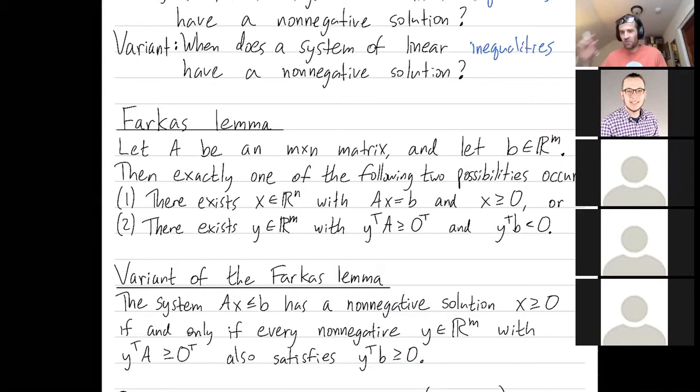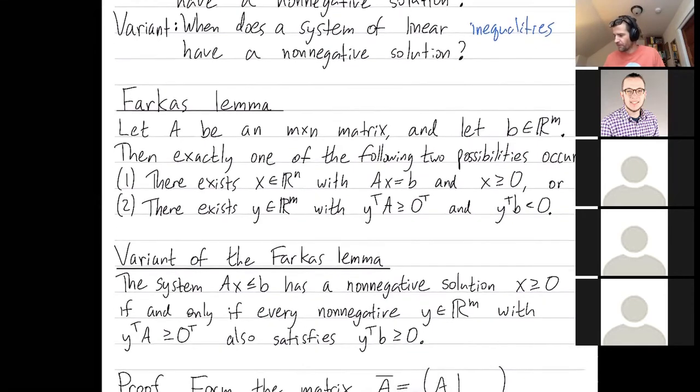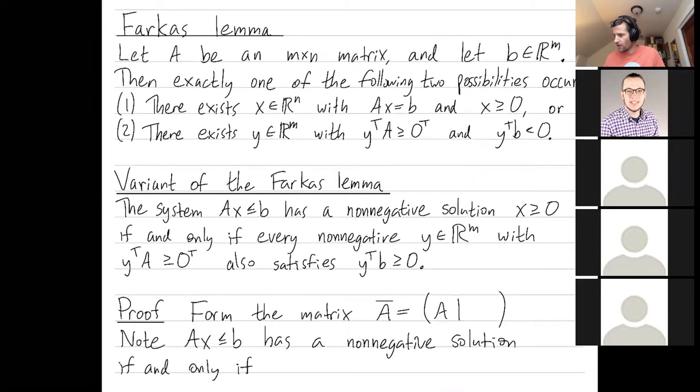All right, let's prove the variant using the original Lemma. It's a pretty slick proof. We're going to form an augmented matrix, A bar. Remember A is size m by n, so m rows and n columns. We're going to augment this with the identity matrix, the m by m identity matrix.